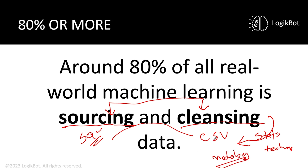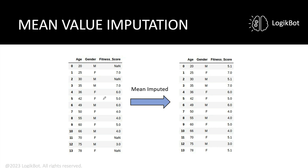Why are we doing all this data cleansing? Because machine learning models are finicky. The better the data, the better the result. Let's take a look at mean value imputation in action. Here we have NaN values. NaN in Python means 'not a number.' We can't have that in our machine learning models — your model is going to do much better if you remove these. So we apply a technique called mean value imputation to get rid of them.